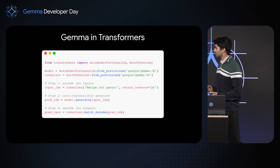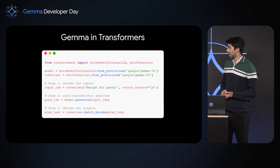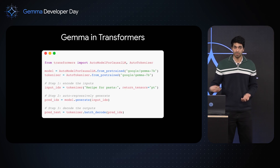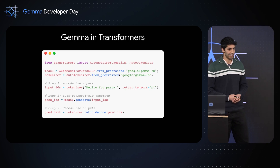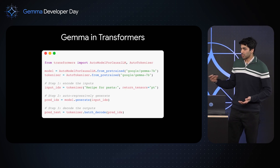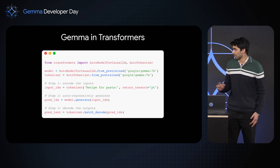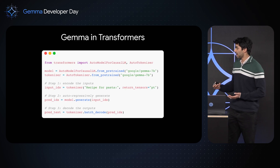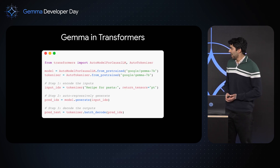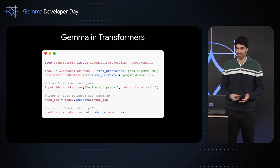So how does inference look in the Transformers library? The first thing we need to do is load the model and the tokenizer from the Hugging Face Hub. Next we pre-process our inputs through the tokenizer to get our token ID representation. We then autoregressively generate our outputs using a generate API, and finally post-process our predictions to get our predicted text — and you can see here it's simply three lines of code to perform inference.